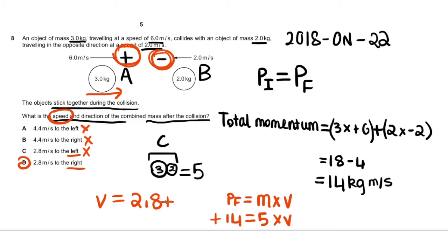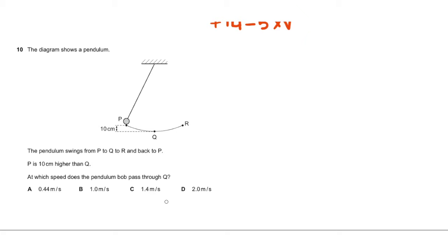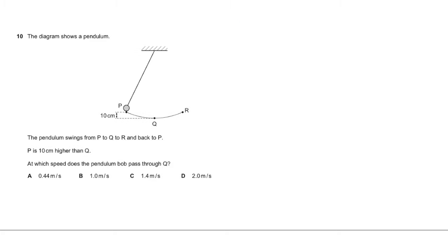Now we'll move on to the second sum, the second tricky sum. The second sum says that there's a pendulum here, a simple pendulum, and the pendulum swings from P to Q to R and back to P.